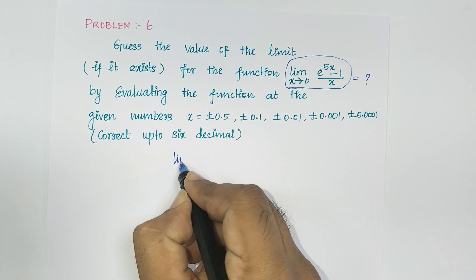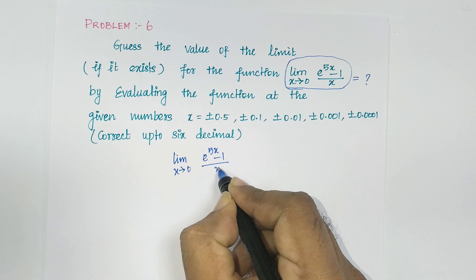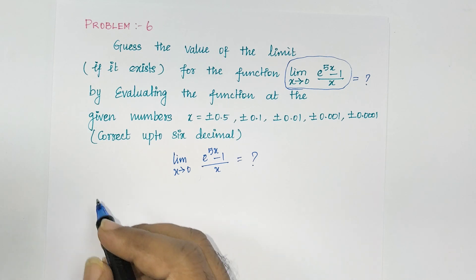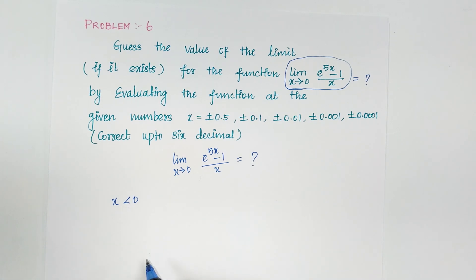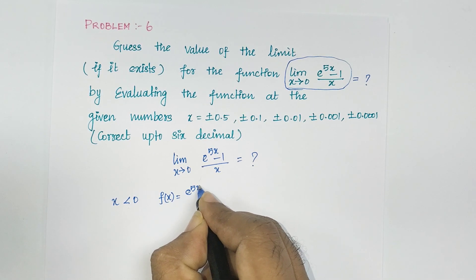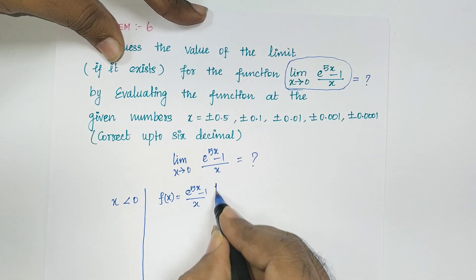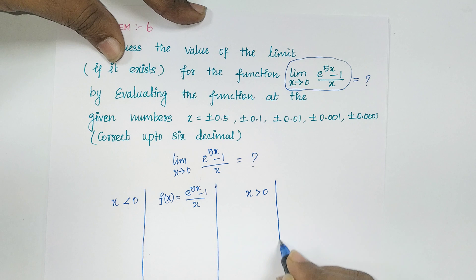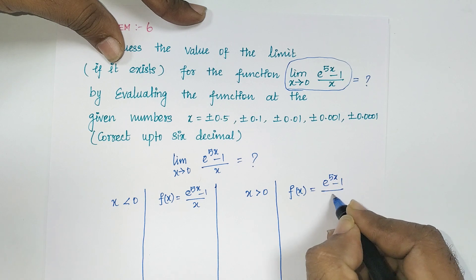I am going to find the limit as x tends to 0 of (e^(5x) - 1) divided by x. They have given plus or minus values, which means for x less than 0, we can write f(x) equal to (e^(5x) - 1) divided by x. And similarly for x greater than 0, f(x) is the same: (e^(5x) - 1) divided by x.